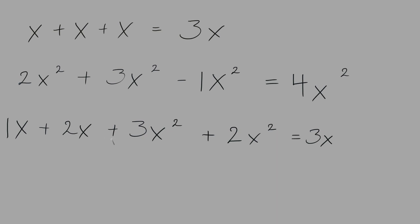We'll put down our 3 and keep the same variable of x. These two terms get added on to the next two terms of 3x squared plus 2x squared. Because they are like terms we can add the coefficients: 3 plus 2 is 5. We keep the same variable and the same exponent. So the answer is 3x plus 5x squared.